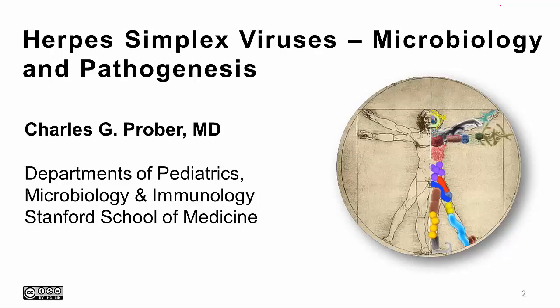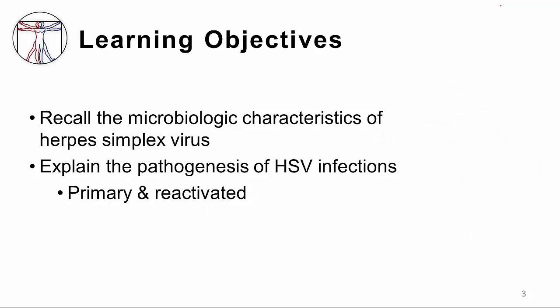My name is Charles Prober from Stanford University and I'm going to speak about herpes simplex viruses, specifically about the microbiology and pathogenesis of HSV. My specific learning objectives for you is that you are able to recall the microbiologic characteristics of HSV and to explain the pathogenesis of infections caused by HSV, both those that are primary and those that are reactivated.